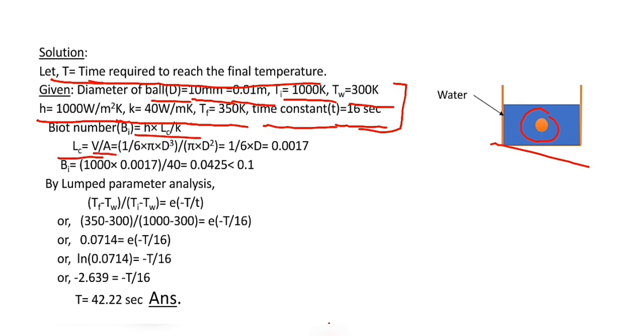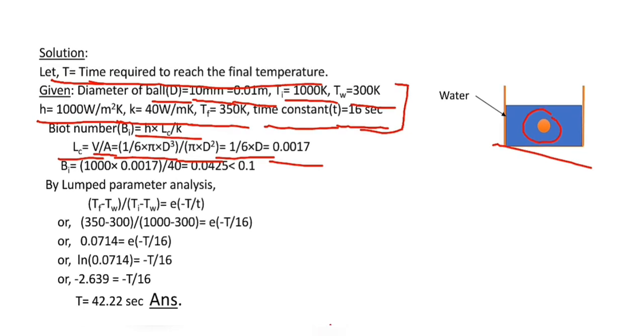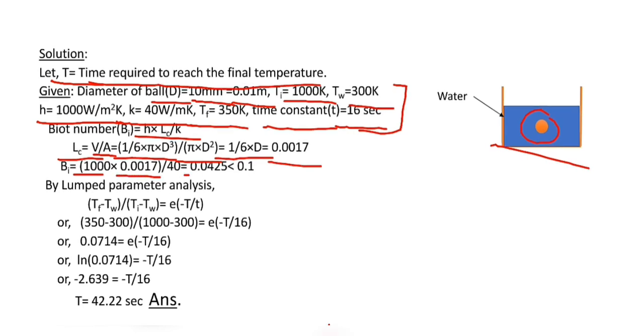Characteristic length Lc is equal to volume per unit area. Volume of sphere is 1/6 pi d cubed and surface area is pi d squared, so it equals 1/6 times d. With d equal to 0.01 meter, it equals 0.0017. Now Biot number equals 1000 times 0.0017 divided by 40, which equals 0.0425, which is less than 0.1.